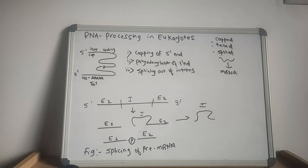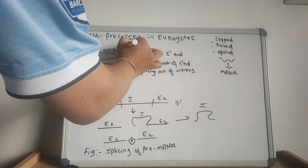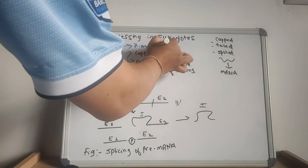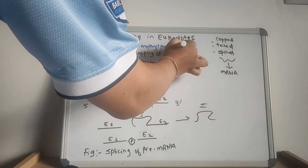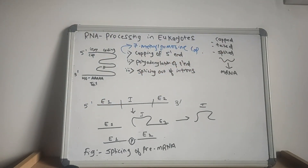A 7-methylguanosine cap is added to the 5' end while the RNA molecule is still being synthesized. The cap structure serves as the ribosome binding site and also helps to protect the mRNA chain from degradation.